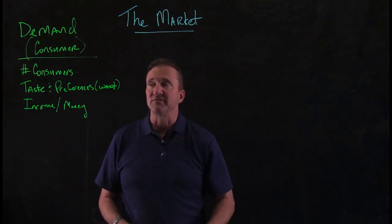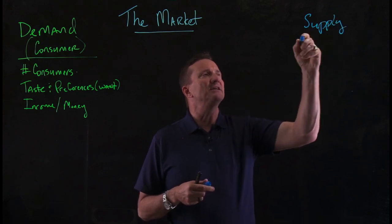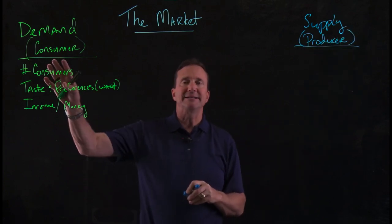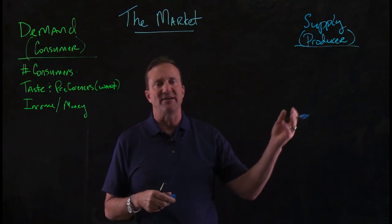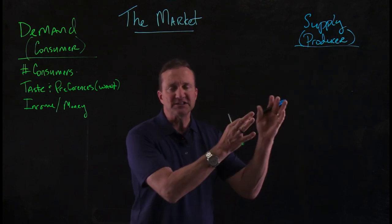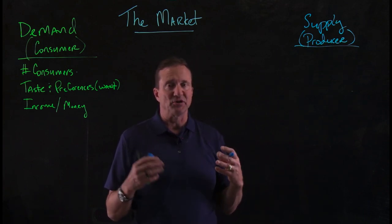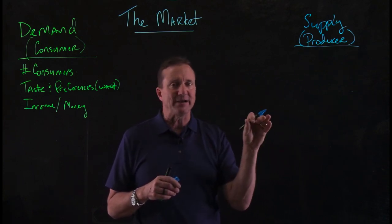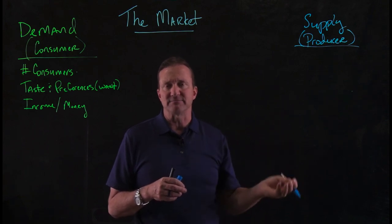Now let's talk about another part of the market — supply. Supply is really talking about somebody called a producer. We were talking about demand as a consumer — one participant that has to be in the market. The other is a producer, someone that is putting the product out there. What is a factor of production? Lots of things build into producers — really about the ability for a producer to make a profit. If a producer can make a profit, they can be a participant in the market. If they can't make a profit, they're not going to be in the market. There's output analysis, input analysis, and similar things.